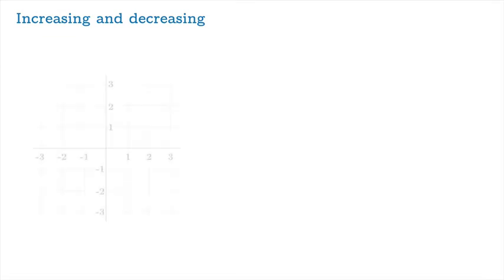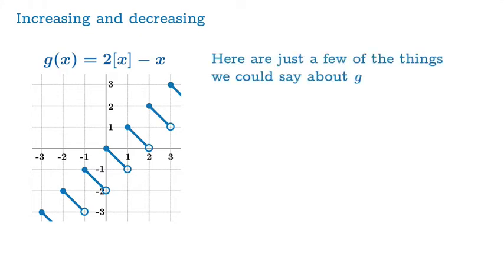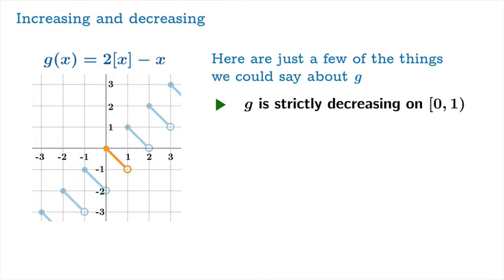Let's look at a pretty strange example. This is the function 2x minus the greatest integer function. What you really just need to know is that the graph looks like a collection of segments, with some endpoints open and some closed. We can use this graph to illustrate the ideas we've been talking about. For instance, if you select the interval from 0 to 1, you can assert that g is strictly decreasing on that interval.